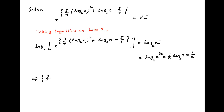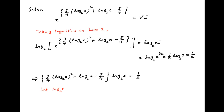Using properties of logarithms, this equation simplifies to 3 upon 4 times log x to the base 2 whole squared, plus log x to the base 2 minus 5 upon 4 times log x to the base 2, is equal to half. Now let log x to the base 2 be equal to z. Therefore, this equation becomes z times, in brackets, 3 upon 4 times z squared plus z minus 5 upon 4, is equal to half.